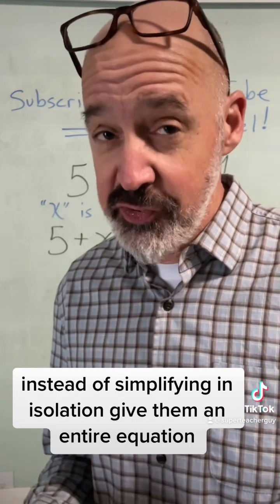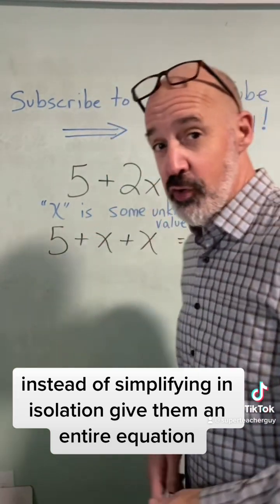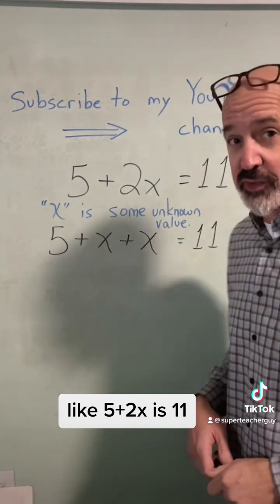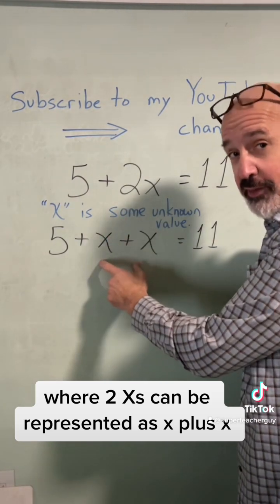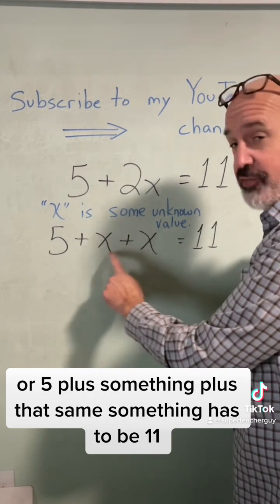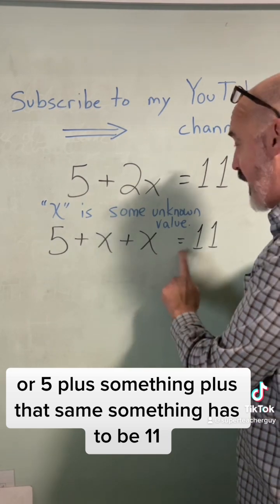Instead of simplifying in isolation, give them an entire equation. Like five plus two X is 11, where two X's can be represented as X plus X, or five plus something plus that same something has to be 11.